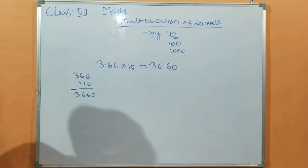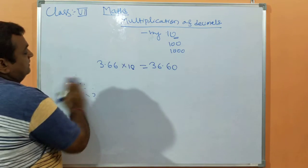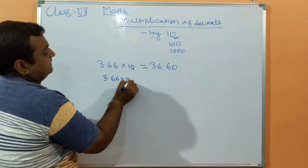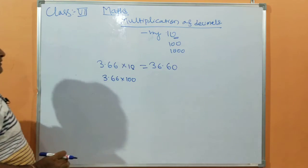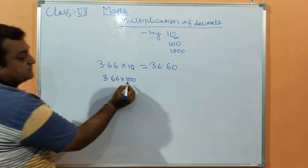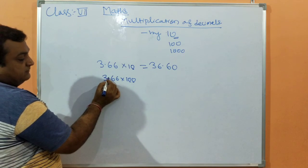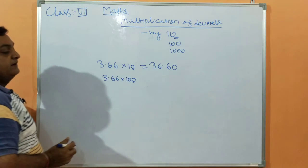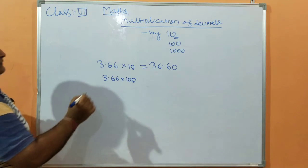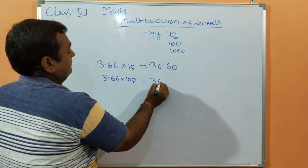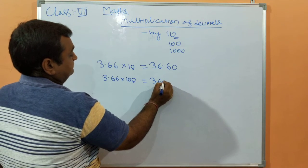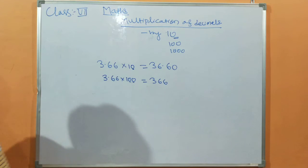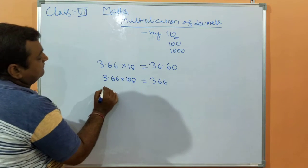Suppose this same number we multiply by 100. The number of zeros is 2, so the decimal position will shift 2 digits to the right side. The answer will be 366.